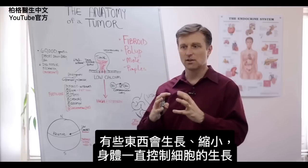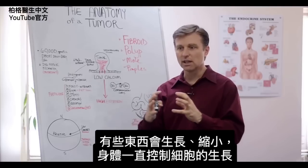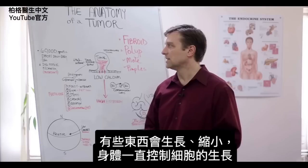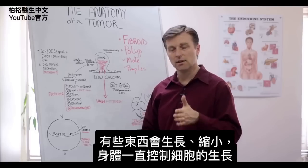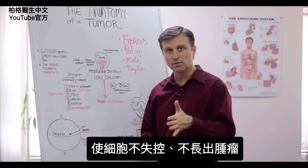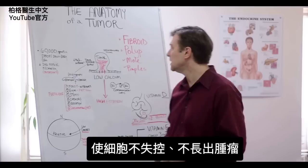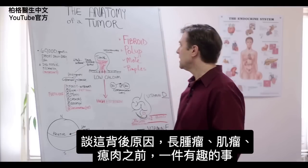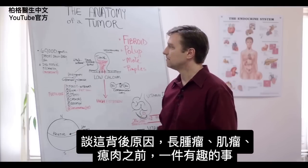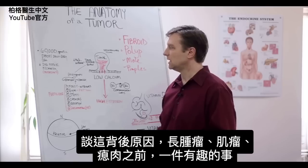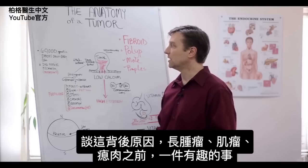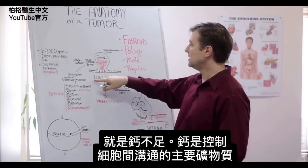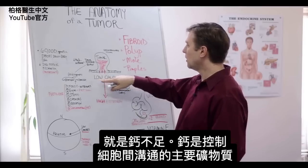So you have all these things that are growing and shrinking. Your body is constantly keeping these cells in check, actually controlling the cellular growth so it doesn't get out of control and create tumors. Today I want to talk about what's behind the scenes. There is one interesting thing that occurs before you get a tumor or a fibroid or a polyp, and that is low calcium.